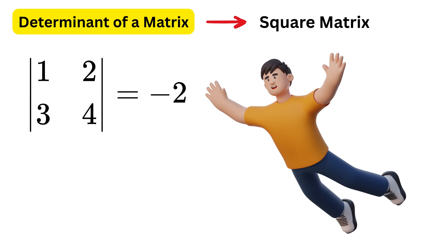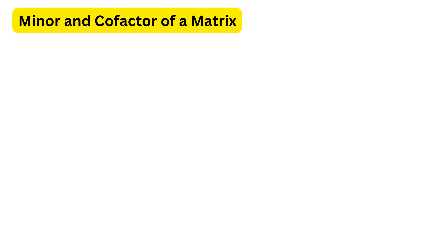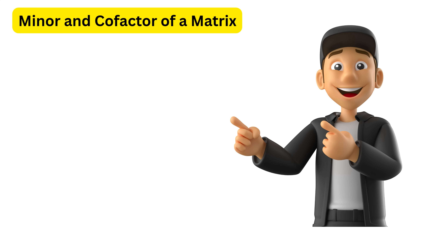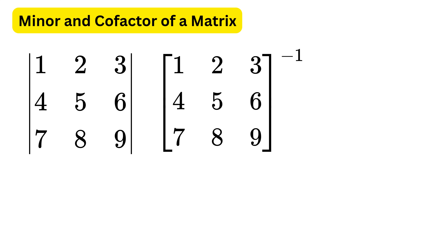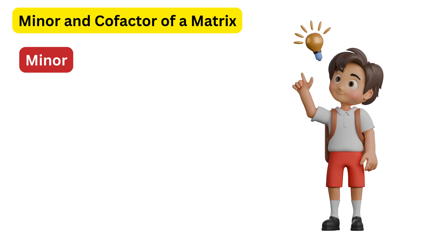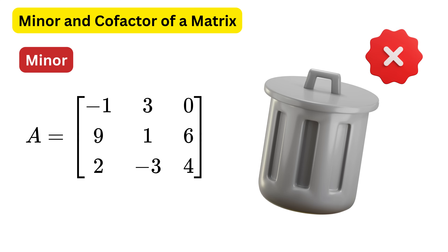Now, before we jump to a 3x3 matrix, we need to understand two very important terms used in matrices: minor and cofactor. These are especially useful when we want to find the determinant of a larger matrix, or when we are trying to calculate the inverse of a matrix using the adjoint method. The minor of an element in a matrix is found by removing the row and column in which that element lies, and then finding the determinant of the smaller matrix that is left.